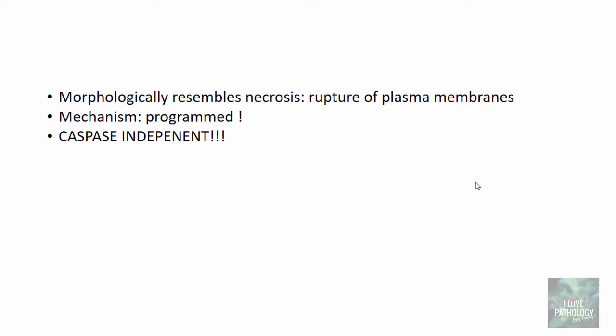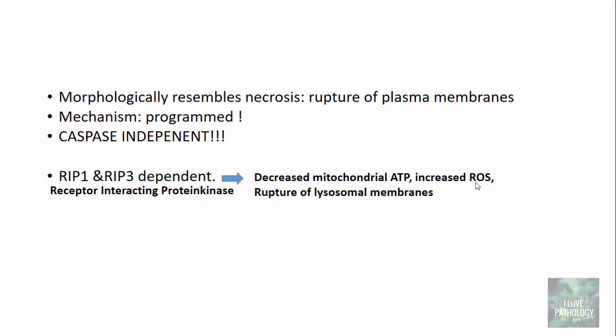Since necroptosis is programmed and caspase-independent, the key players are RIP1 and RIP3 — receptor interacting protein kinases. When these kinases are activated, it leads to decreased mitochondrial ATP, increased reactive oxygen species, and rupture of lysosomal membranes. The end result is the morphological appearance of necrosis, which is why it is also referred to as programmed necrosis.